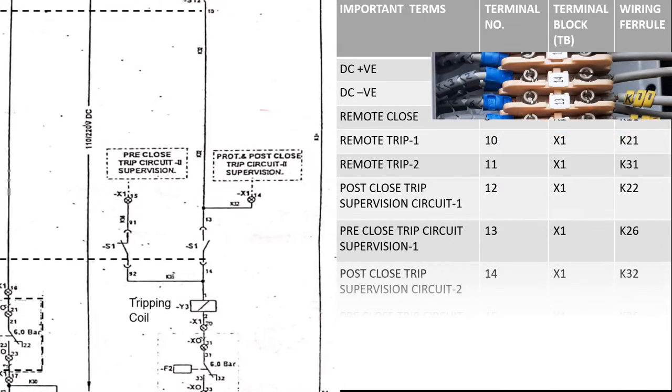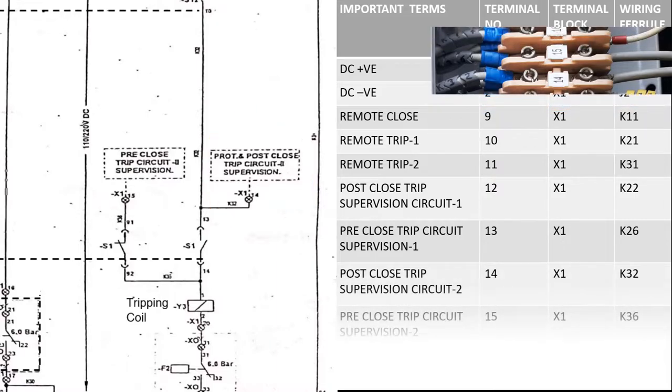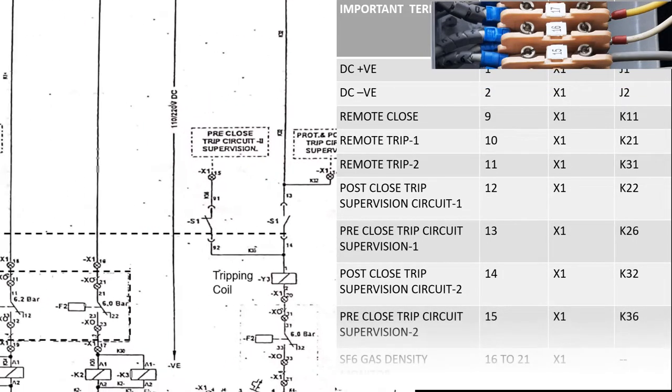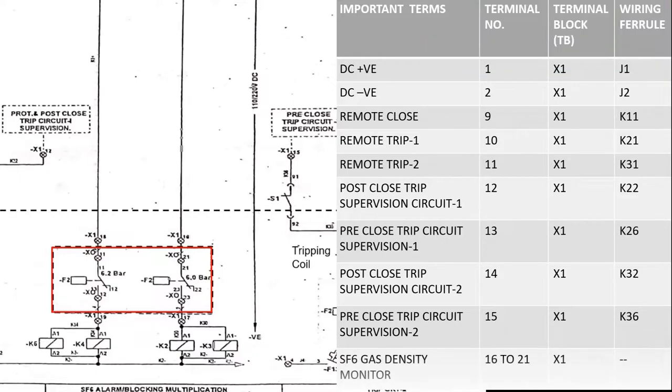And last, SF6 gas density monitor is given on terminal 16 to 21 on TBX1.